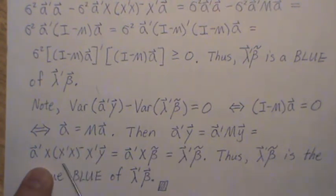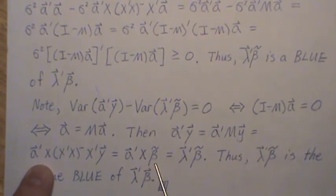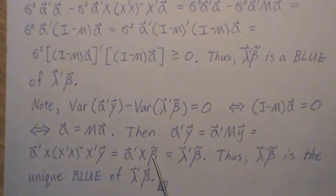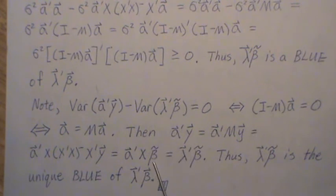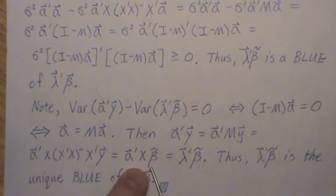M times y, we could have gone from here to here because M y is actually X beta tilde. That's one of the requirements of the least squares estimates, that X times it is unique and it equals M y. Then a X...